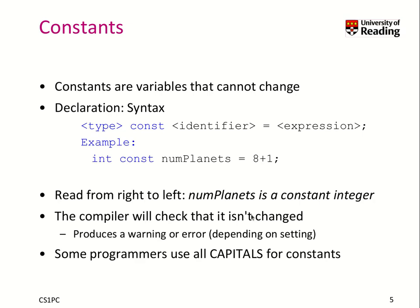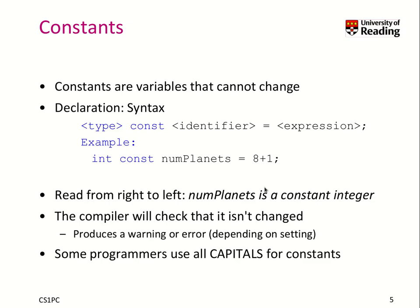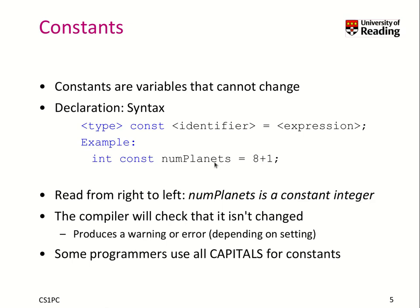You may ask why use constants and not just a normal variable. Well, you may accidentally change it — you may not have fully understood an API and accidentally change it, which leads to unintended side effects. It's also very useful for functions because it clarifies the meaning of an argument. And why not just use a literal like 9 instead of numPlanets? The variable allows us to maintain semantic meaning — by reading 'numPlanets' I understand what it means. Also, I can have one place in my program where I change the definition, and the value changes throughout the program.